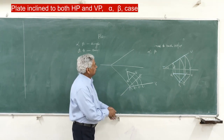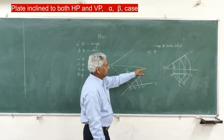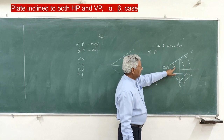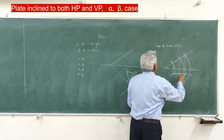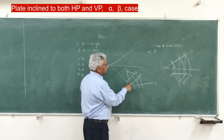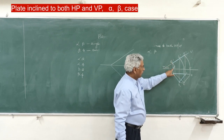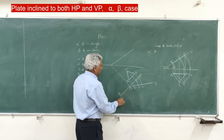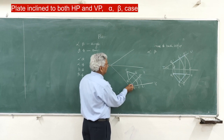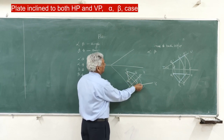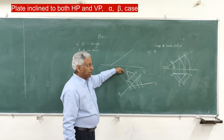Rotate each point about T1 and get the auxiliary elevation — A to A1 dash, B to B1 dash, and C to C1 dash. From each point, draw a projector perpendicular to the ground line. Remember, the ground line is X1Y1, and therefore you get the projection — the new plan of each point. Draw perpendicular to ground line, and the plan will move parallel to the ground line.